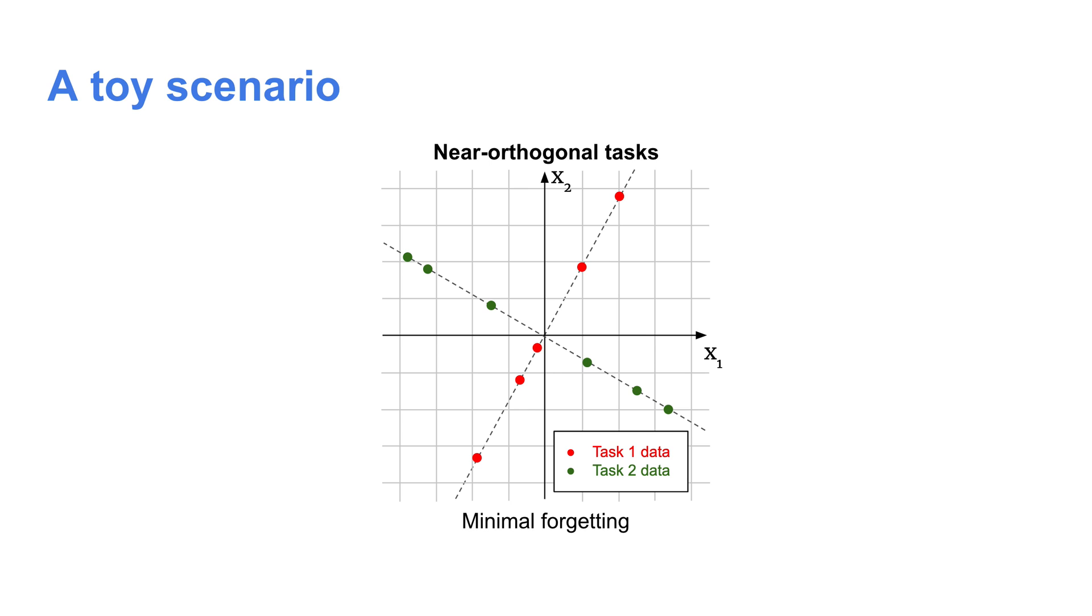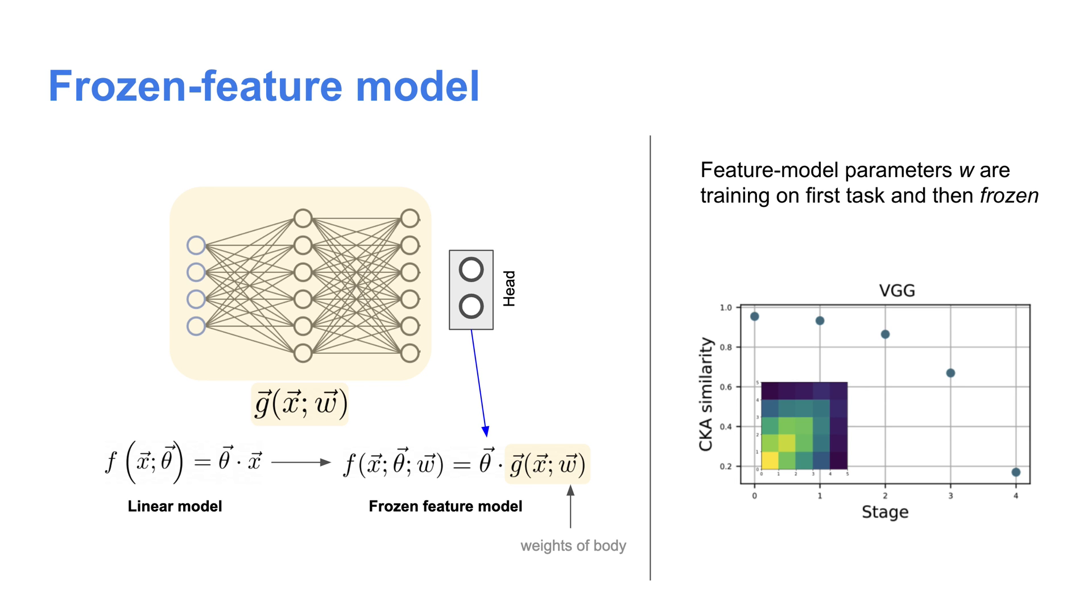Let's say we take our initial model trained on task one and then train it on a second task, task two. Then the degree of forgetting will depend strongly on the orientation between the two task subspaces. If these tasks are nearly orthogonal, then the second task training doesn't affect the task one components of the weights, and there will be minimal forgetting. So in this linear regression case, once the features are sufficiently different from one another or orthogonal, there will be no forgetting.